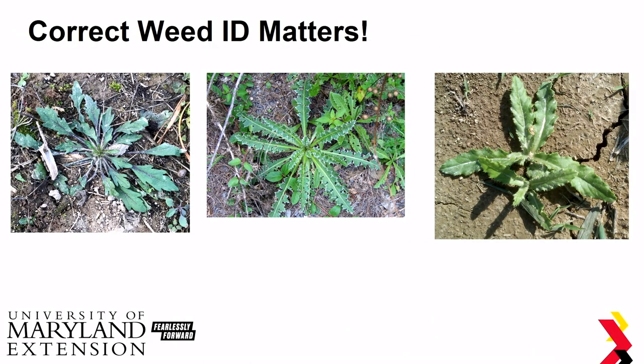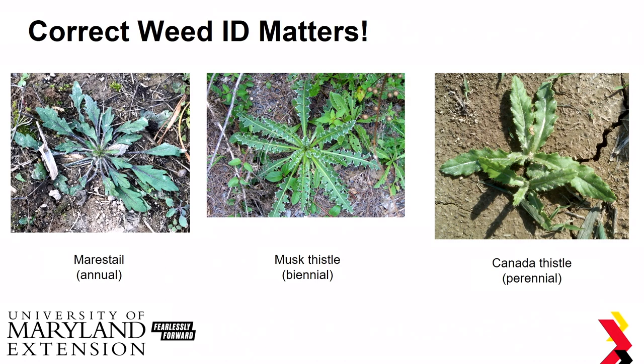Here's an example of why correct ID matters. All of these species look the same — they all have a rosette — but one is an annual, one is a biennial, and one is a perennial weed on the Maryland noxious weed list. We've got mare's tail, which is an annual; musk thistle, a biennial; and Canada thistle. The methods you use to control all these weeds are going to be very different.